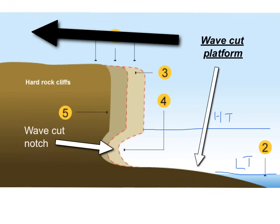This wavecut platform forms where the cliff face used to be, and is exposed at times of low tide. They tend to be quite smooth, and the reason behind this is because as fallen rock, eroded material, and sediments are dragged back out to sea in the backwash, they smooth the wavecut platform via the process of abrasion.